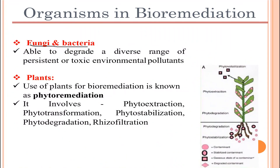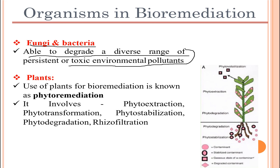Fungi and bacteria are able to degrade a diverse range of persistent or toxic environmental pollutants. Plants are also used for bioremediation, known as phytoremediation, and it involves processes such as phytoextraction, phytotransformation, phytostabilization, phytodegradation, and rhizofiltration. These are some of the important organisms involved in bioremediation. Thanks for watching, and stay tuned for the next video.